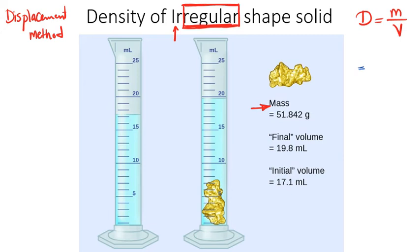So I'm going to write that. Density is mass over volume. For mass, 51.842 grams divided by volume. The volume for an irregular shape solid is determined using the displacement method.